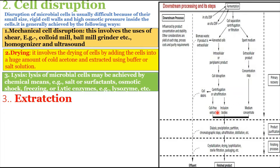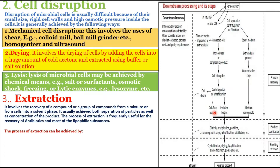The third step is extraction. After the cell has been disrupted and lysed, its contents are free and must be extracted. Recovery of a compound or group of compounds from the mixture or from cells into a solvent phase is called extraction. It achieves both separation of particles and concentration of the product, removing cell debris. Extraction is frequently used for antibiotics and most lipophilic substances.